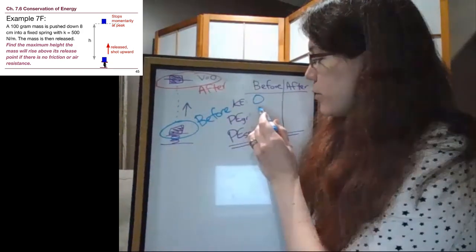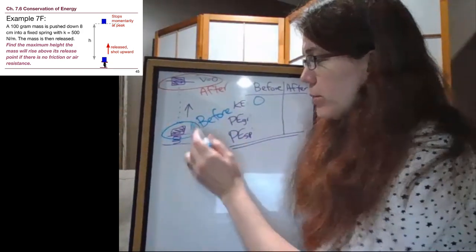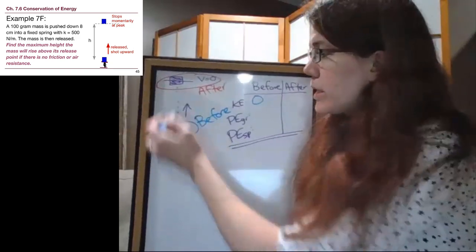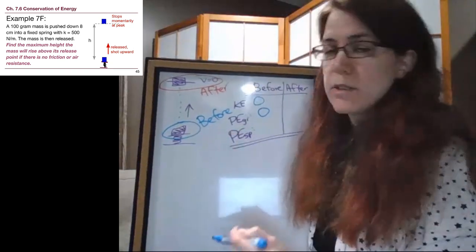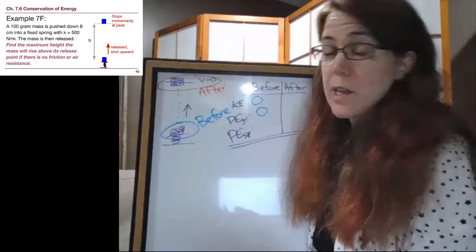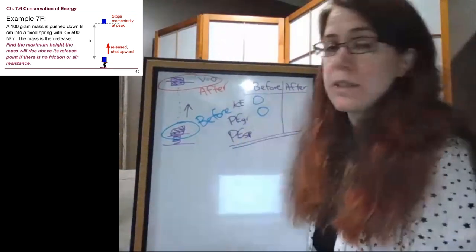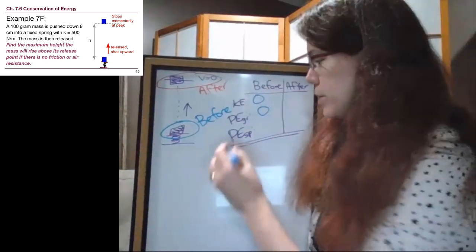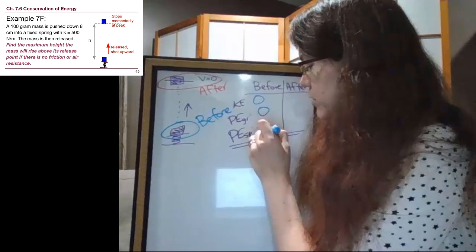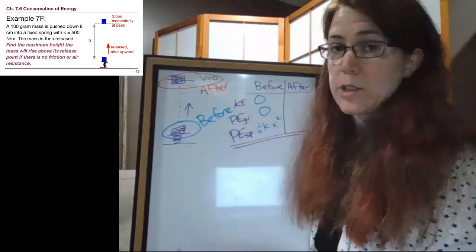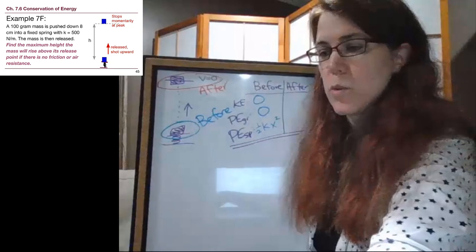So we ask ourselves if we are higher at the beginning of the problem in the before picture. And we can see right here that we are not higher. And then this new question that has come up, it's not that complicated a question. It's just, are we attached to a spring? Are we interacting with a spring? And here we absolutely are. That spring is there. And so we use the new term that we introduced in the lecture slides, one half kx squared.